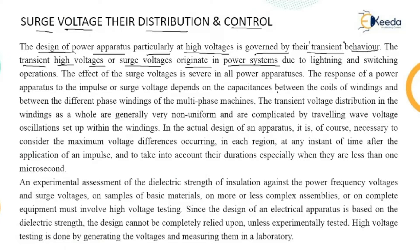Transient high voltages, or surge voltages, originate in power systems. The reasons behind surge voltage are lightning and switching operations. Whenever lightning falls on a transmission line or towers, surge voltages occur. Similarly, whenever we perform a switching operation, that switching again causes the formation of a transient called a surge voltage.